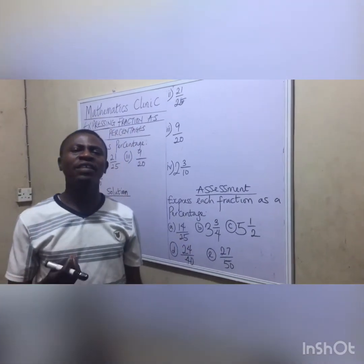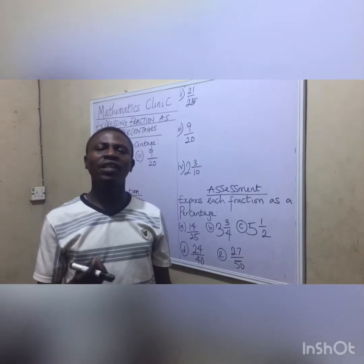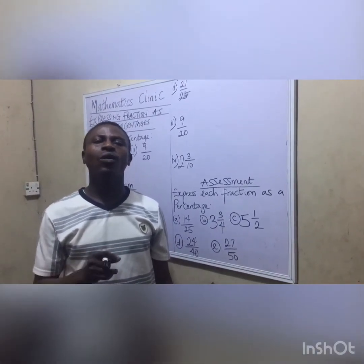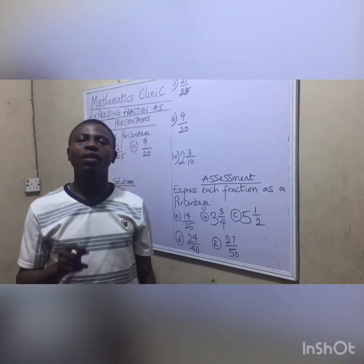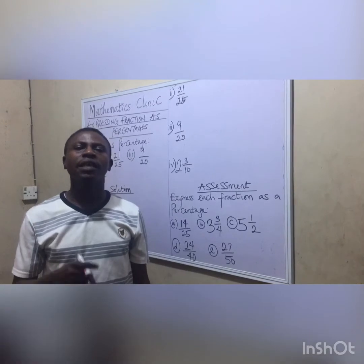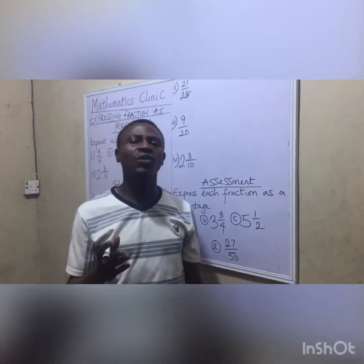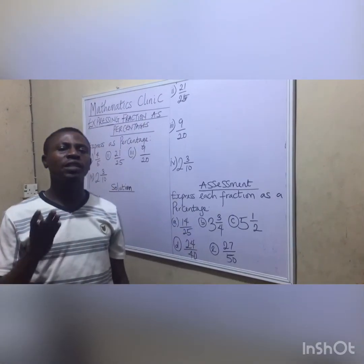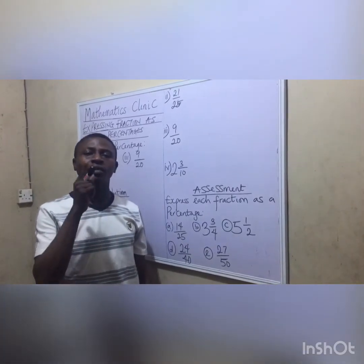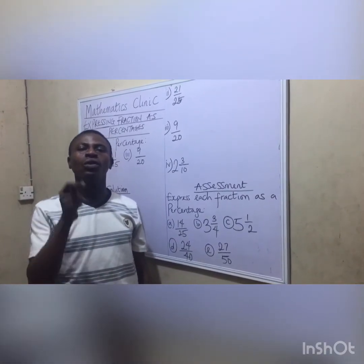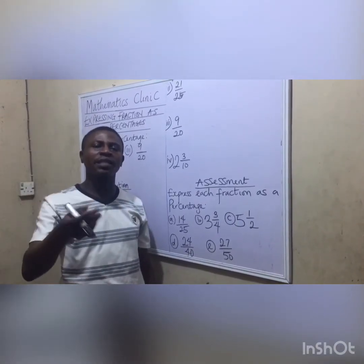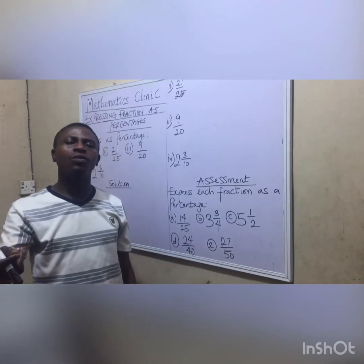I told you that if you have a fraction where 100 is written as the denominator — for instance, 2 over 100, 3 over 100, 4 over 100 — it can also be written as 2%, 3%, and 4%, and so on. I also told you the symbol for percentage: you write 1, then 0, slash it, bend it, and put the second 0 underneath. That is the symbol for percentage.